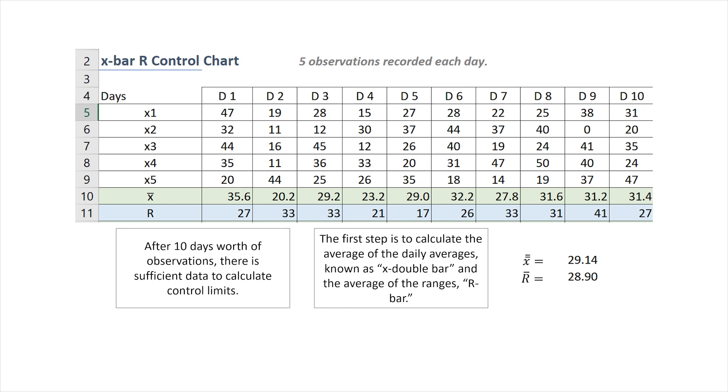After 10 days worth of observations, there is sufficient data to calculate control limits. The first step is to calculate the averages, the average of the daily averages known as X double bar or grand average, and also the average of the ranges, known as R bar. So X double bar is calculated to be 29.14 and R bar is 28.9.